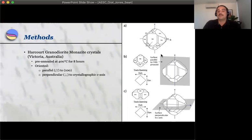So you can see here a typical monazite crystal with the A, B, C axis, and these are the Miller indices. For grains that have been oriented parallel to the 100 face, this is the plane that we're analyzing. And for grains that were oriented perpendicular to C axis, this is the plane that we're analyzing.